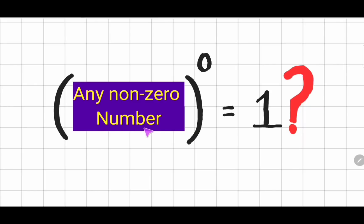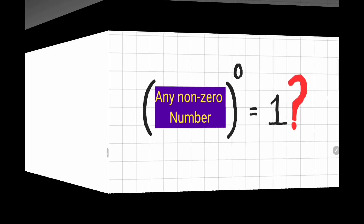Why does any non-zero number to the power 0 equal 1? Imagine a scenario where you have one orange. If you double the number of oranges you have, you get 2 oranges.